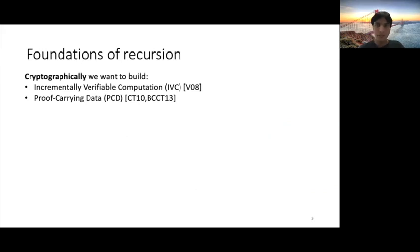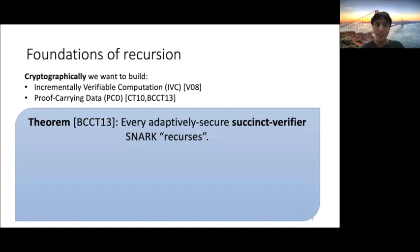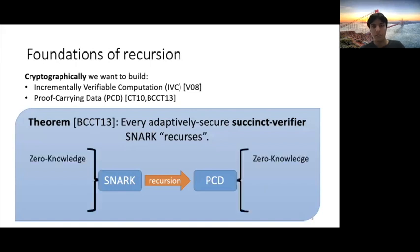So there's this theorem from a paper a couple years ago that every adaptably secure, succinct verifier SNARK can recurse. So this means you start with the SNARK, and you recurse in the natural sense, and you'll get proof carrying data. And this compilation procedure preserves many properties of the underlying SNARK. If you start with a zero-knowledge SNARK, you'll get zero-knowledge PCD. It preserves the setup type. So if you have a trusted-setup SNARK, you'll get trusted-setup PCD, and a transparent SNARK will yield a transparent PCD.